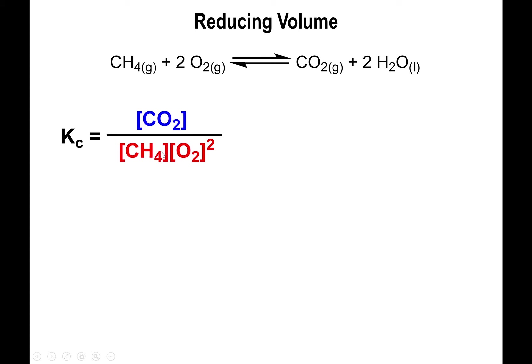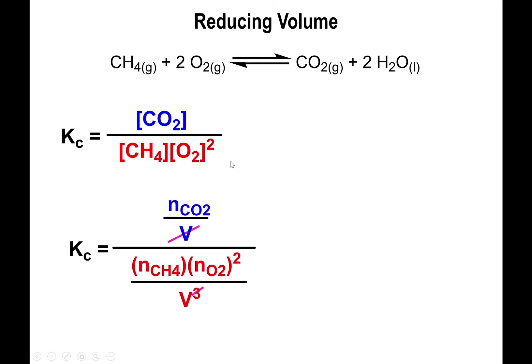Consider the Kc expression: concentration of CO₂ over concentration of CH₄ times concentration of O₂ squared. Concentrations can be thought of as moles per volume. So you have moles of CO₂ over volume, divided by moles of CH₄ over volume times moles of O₂ squared over volume squared. The volumes are the same throughout because all gases share the same flask — they must be in the same container for any reaction to occur.